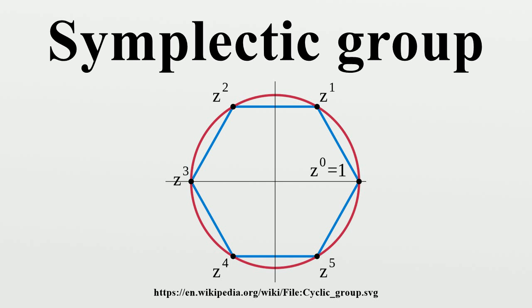As a Lie group, Sp(2n,R) has a manifold structure. The manifold for Sp(2n,R) is diffeomorphic to the Cartesian product of the unitary group U(n) with a vector space of dimension n(n+1). Infinitesimal generators: The members of the symplectic Lie algebra sp(2n,R) are the Hamiltonian matrices. These are matrices such that where B and C are symmetric matrices. See classical group for a derivation.